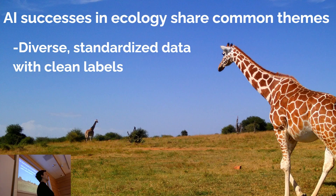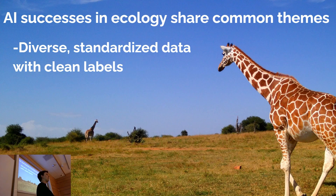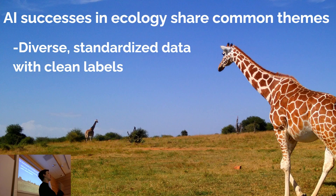A good example is Merlin Sound ID, developed by Grant Van Horn. The way they got that model to be good was by cleaning up the training data. There's nothing special about the machine learning at all — they built a really intelligent system to help a sparse set of experts efficiently clean up inaccurately labeled training data. And that got them to the very high precision you see in that app, which is really remarkable.